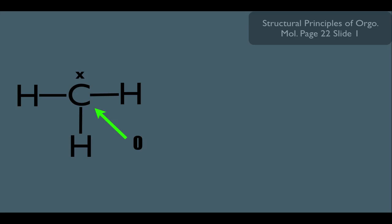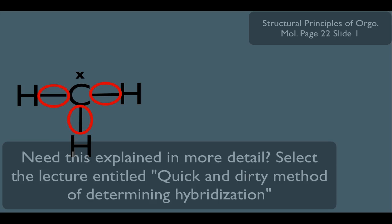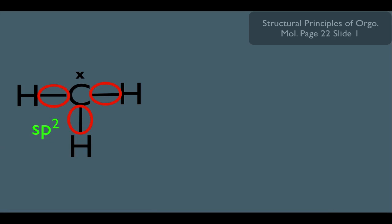And what is the hybridization of this carbon? Well, notice he has a total steric number of three, which simply makes him sp2 hybridized, which means his bond angle should be 120 degrees.